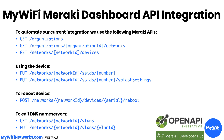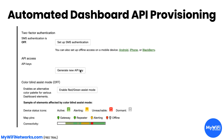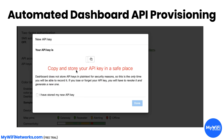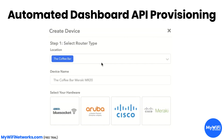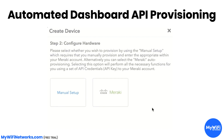We've worked closely with the Cisco Meraki team to create a unique dashboard API integration that automates everything. To get set up, you go to your Meraki cloud dashboard and copy your API key. Then you hop on over to your white-label platform powered by MyWiFi Networks and add a Meraki device.